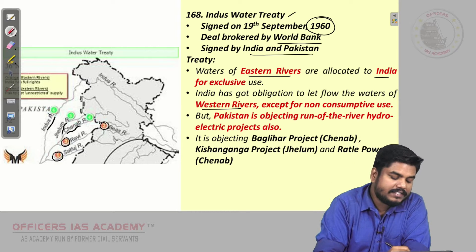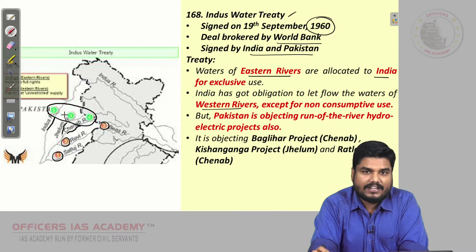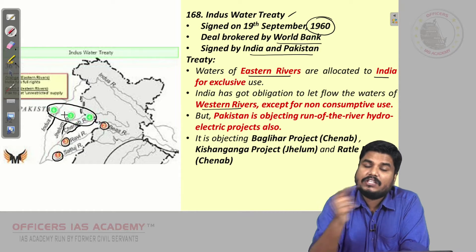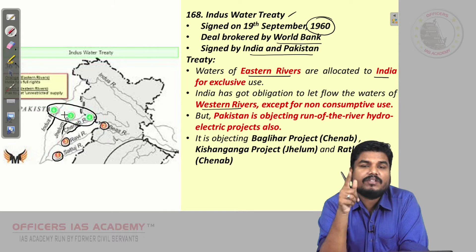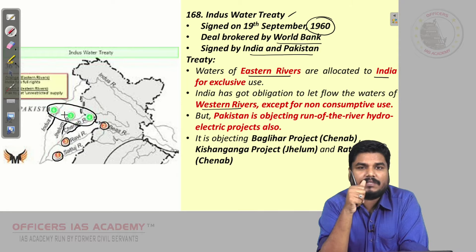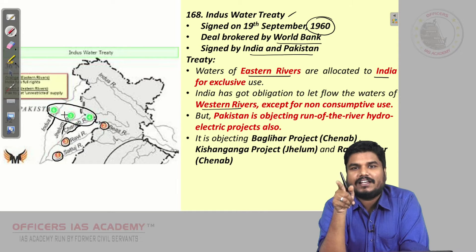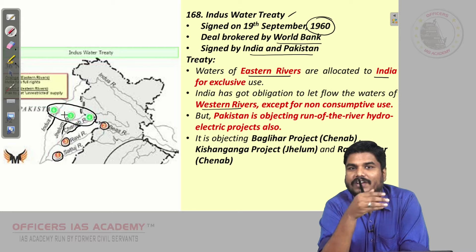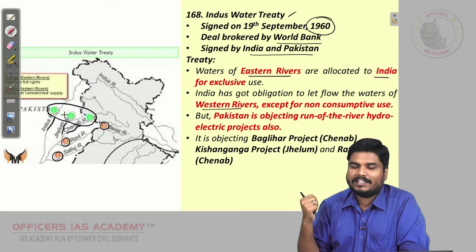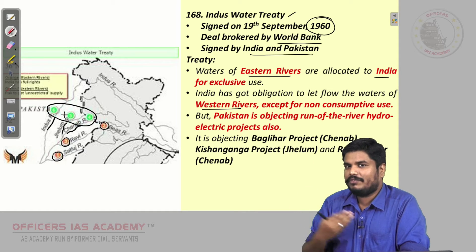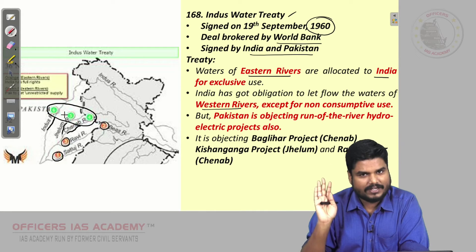However, though these rivers can be exclusively used by Pakistan, according to this treaty, India can still use these river waters for non-consumptive purposes — that is, without diverting or consuming that water. If India can make use of those rivers for any purpose without consuming the water, India can go ahead.